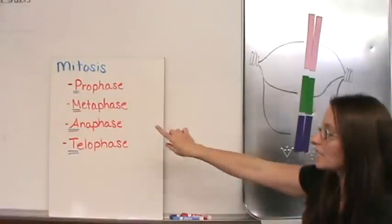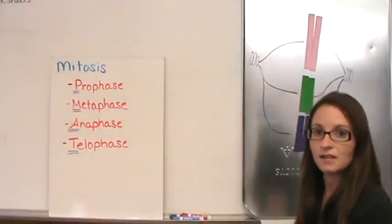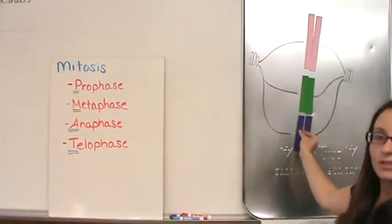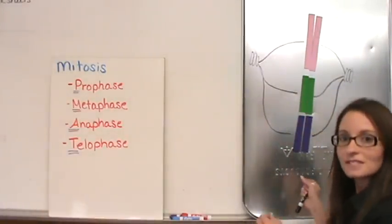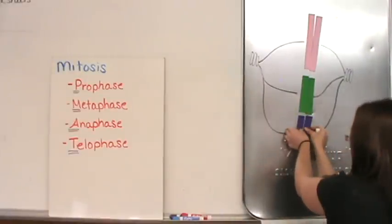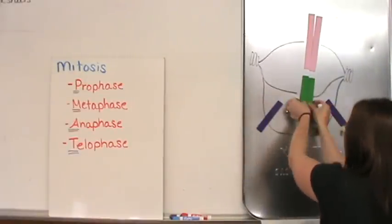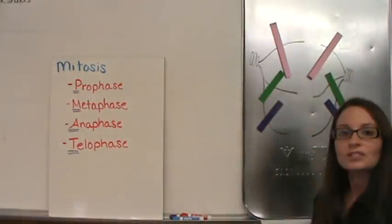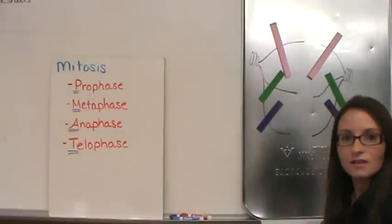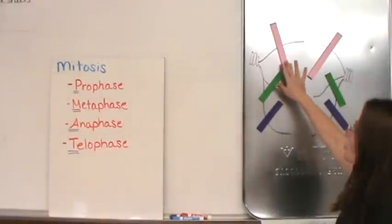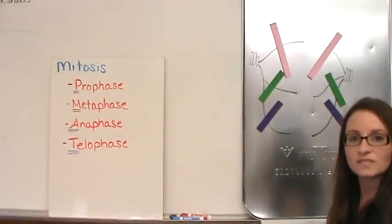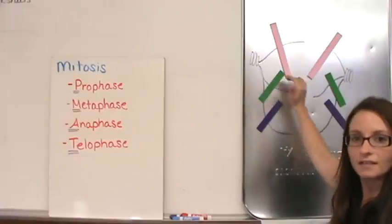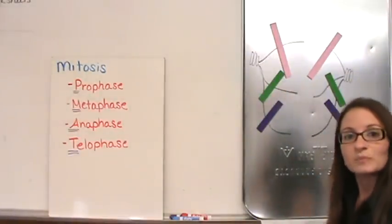During anaphase, the sister chromatids actually separate and they get pulled to opposite sides of the cell. So as you notice, each chromatid is an identical copy of DNA. So each side is going to get a copy of the DNA.